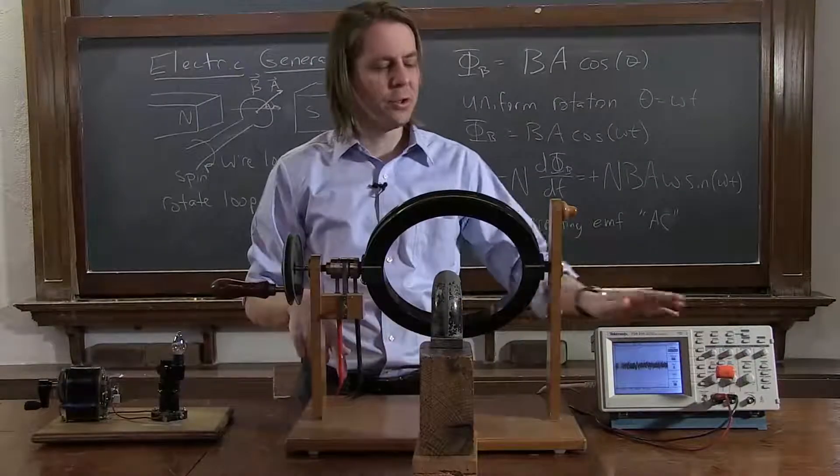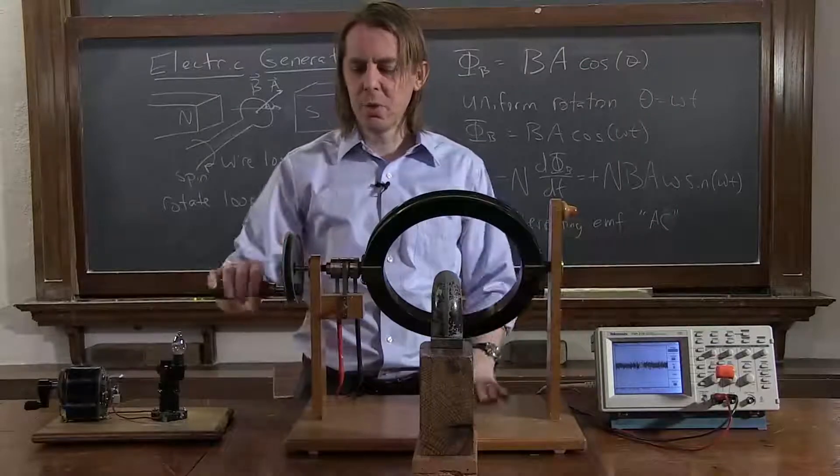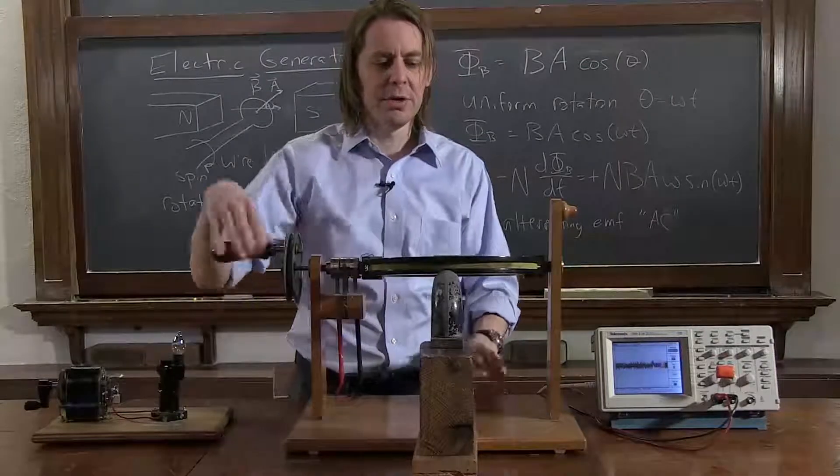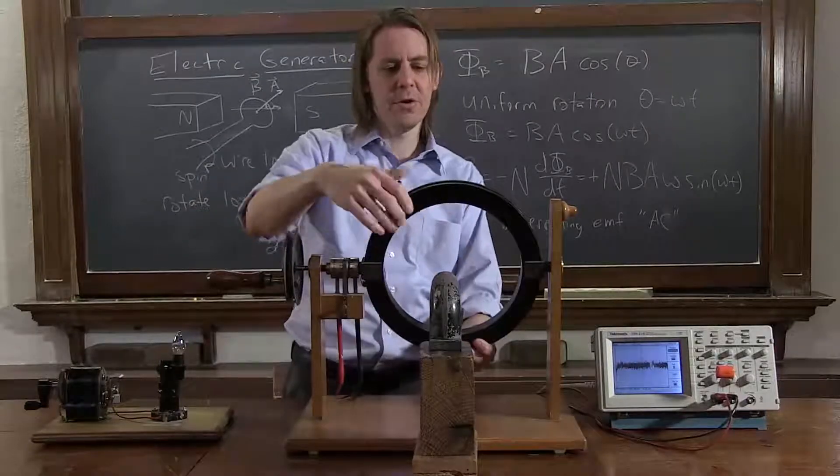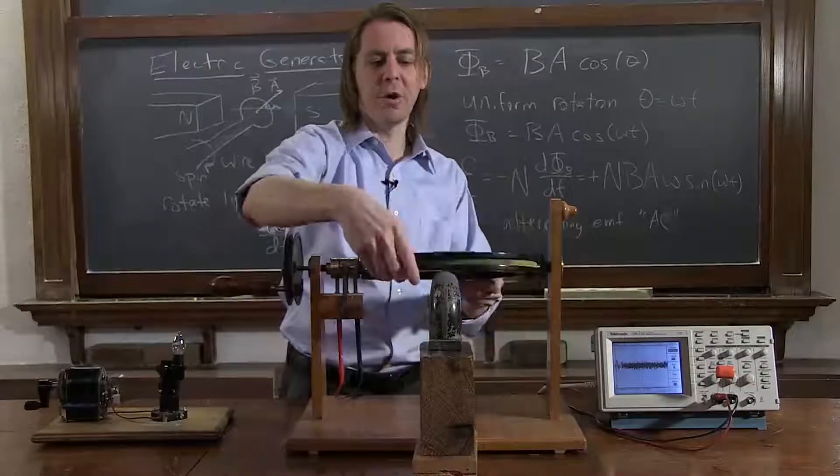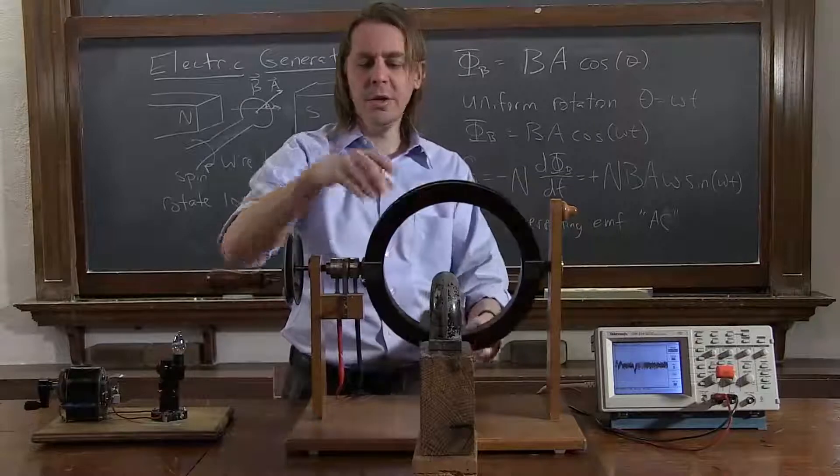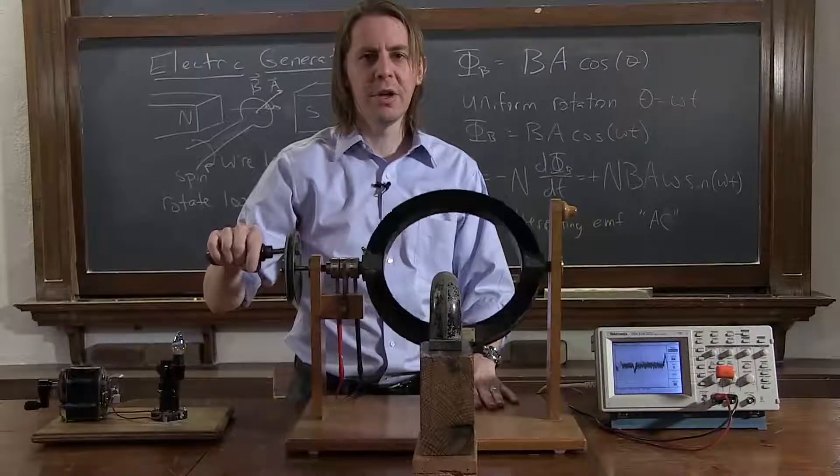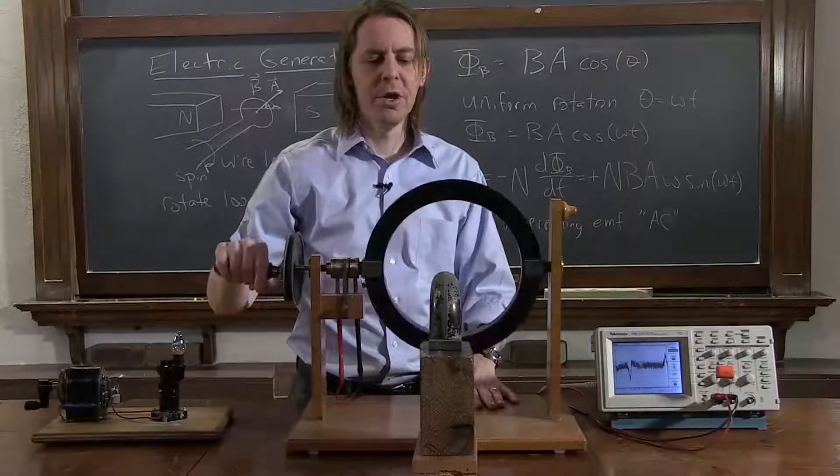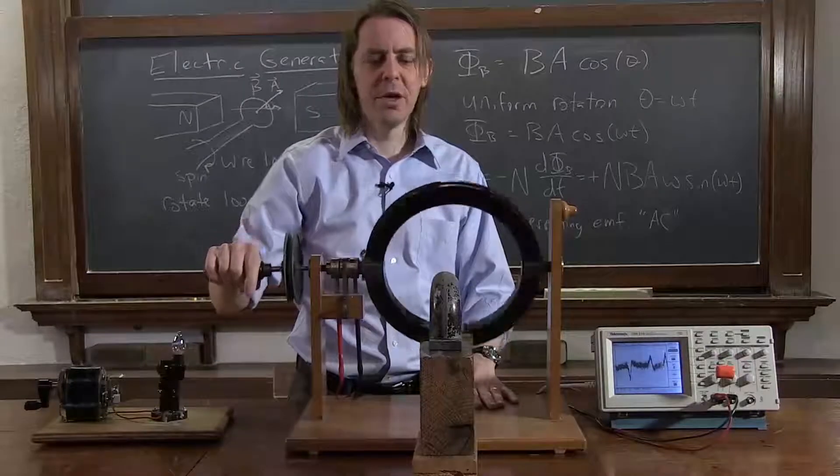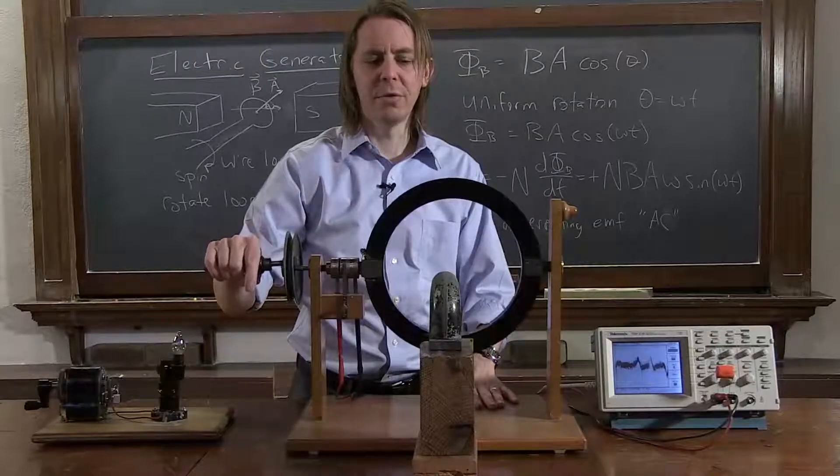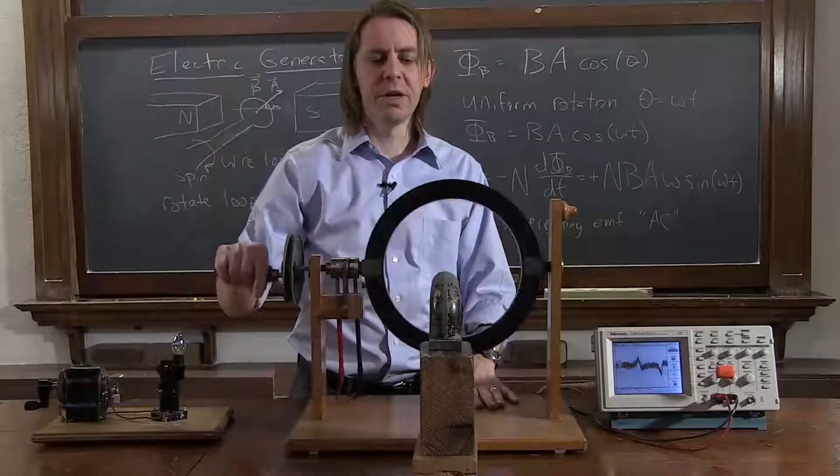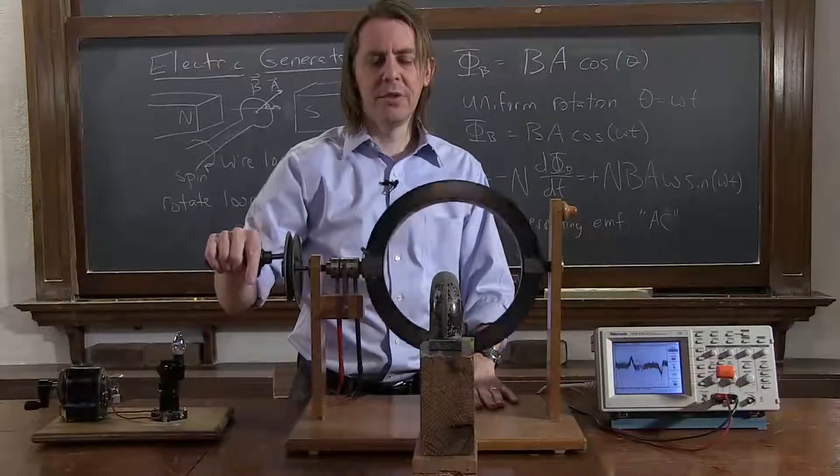And the EMF induced is going to the oscilloscope. So as we watch, I'll rotate it kind of slowly. We are changing the flux. Here, we have a large flux. When we're like this, we have zero flux. So as I rotate it, I'll try to rotate it uniformly. We'll get a varying flux through the loop. So we should induce an EMF. So what you can see on the oscilloscope is sort of a positive high voltage, and then it goes negative, and then it goes positive, and then it goes negative.